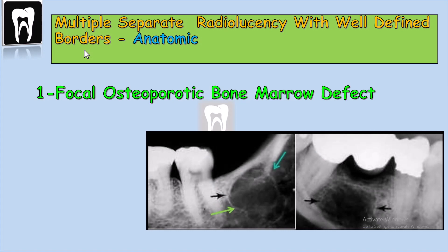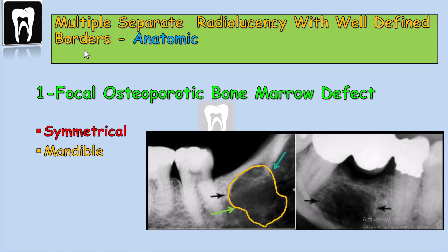Focal osteoporotic bone marrow defect inside the jaw is usually seen symmetrical or in both sides of the jaw. It is common in the mandible because the mandible, especially in the posterior part, the bone space is very big and the trabecular bone is much less than other parts of the jaw. So wherever the trabecular bone is less, the bone marrow space is bigger. This is an anatomic appearance. In women with osteoporosis, the bone marrow space is much more obvious. So multiple separate radiolucency seen bilateral in the mandible — our first guess can be the bone marrow defect.